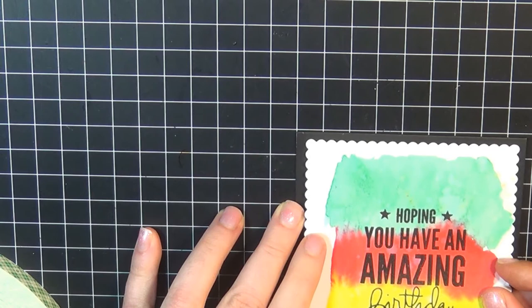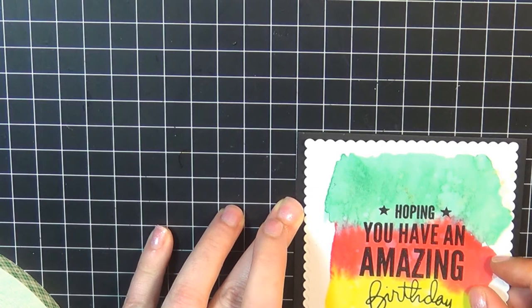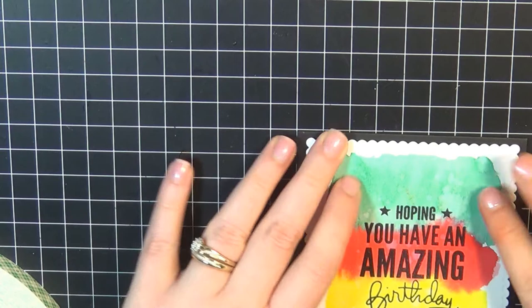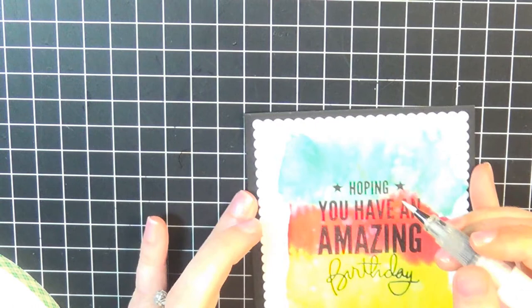I'm going to go ahead and line this up in the center of the card base. My next step—the magnetic—my next step is going to add just a little bit of accent or shimmer to the stars. I'm going to use, of course, my Wink of Stella. Can't do without that Wink of Stella, you know.